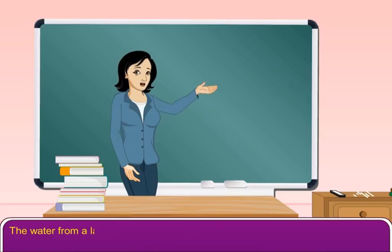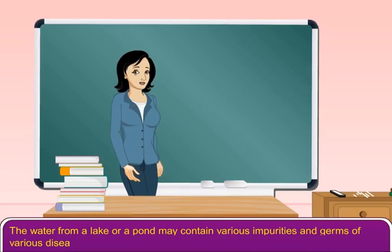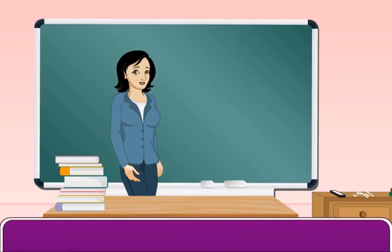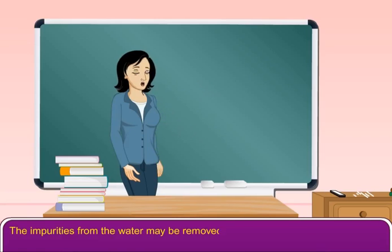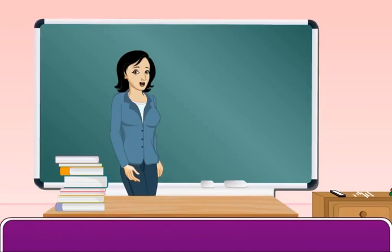The water from a lake or a pond may contain various impurities and germs of various diseases. The impurities from the water may be removed by decantation, filtration, boiling, and using chemicals. Let us discuss these methods.